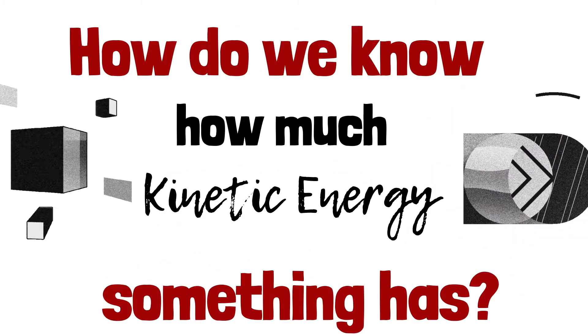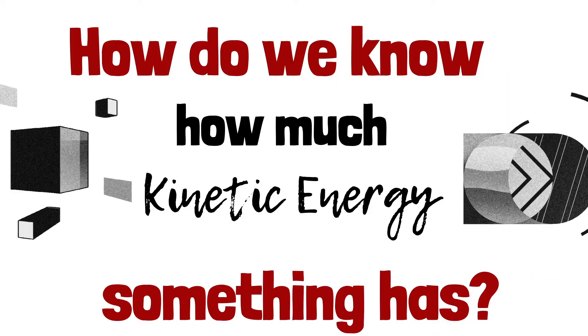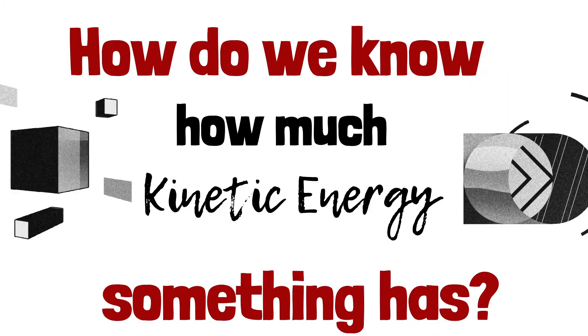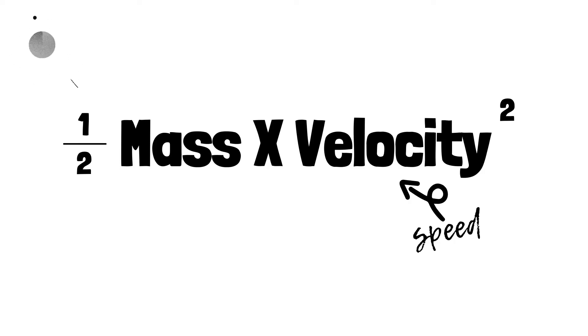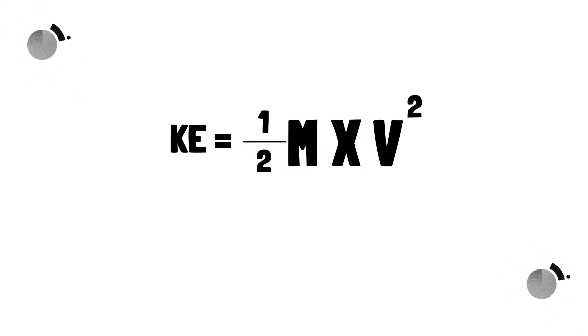So in order to know how much kinetic energy something has, there's a formula. Once we know the mass and the velocity, we can take half the mass and multiply it times the velocity squared, which is the same as speed, and we get kinetic energy. The formula can be reduced down to look like this: KE equals 1/2 m times v squared.